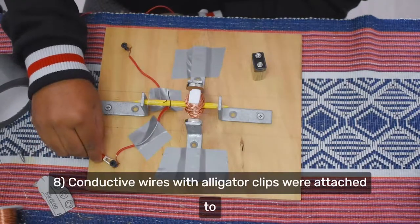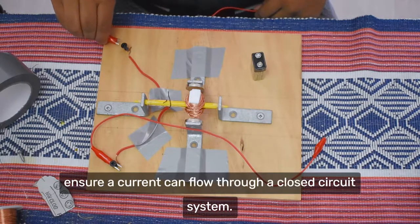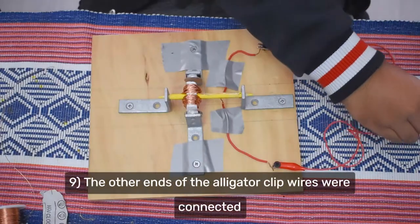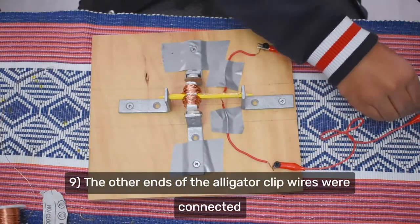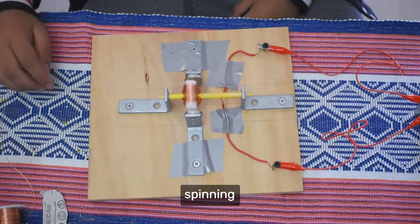8. Conductive wires with alligator clips were attached to the screws and these wires were attached to a transformer to ensure a current can flow through a closed circuit system. 9. The other ends of the alligator clip wires were connected to the battery. The motor did not spin sufficiently so a manual notch was given to get the coil properly spinning.